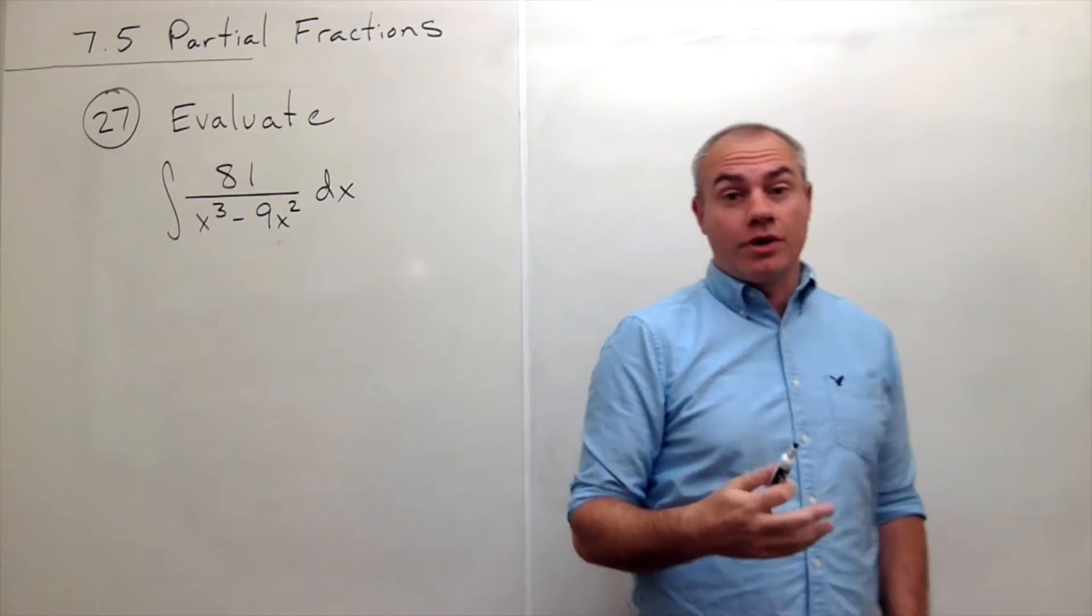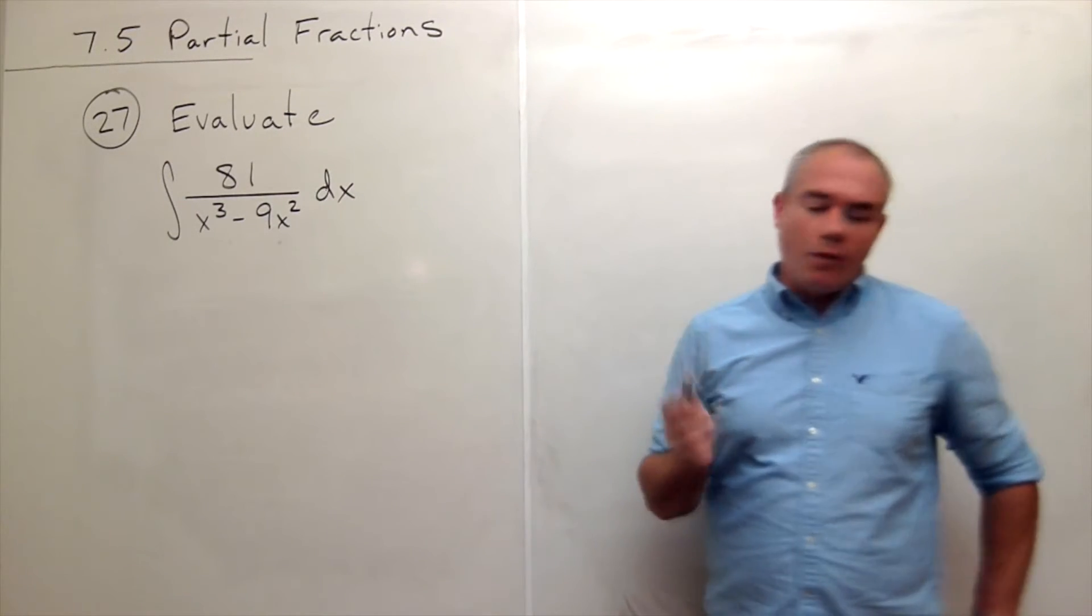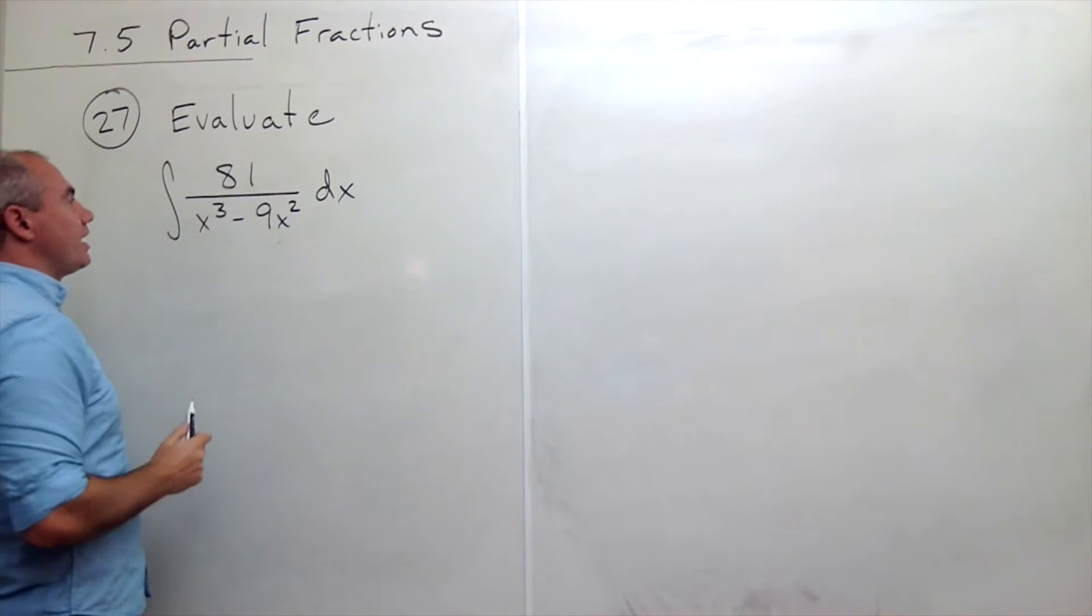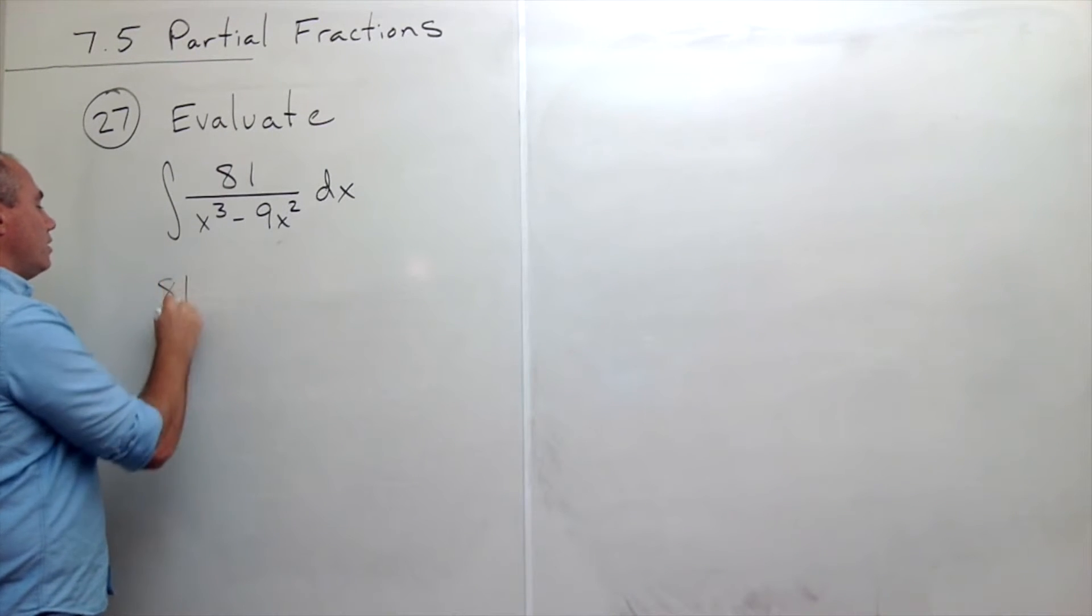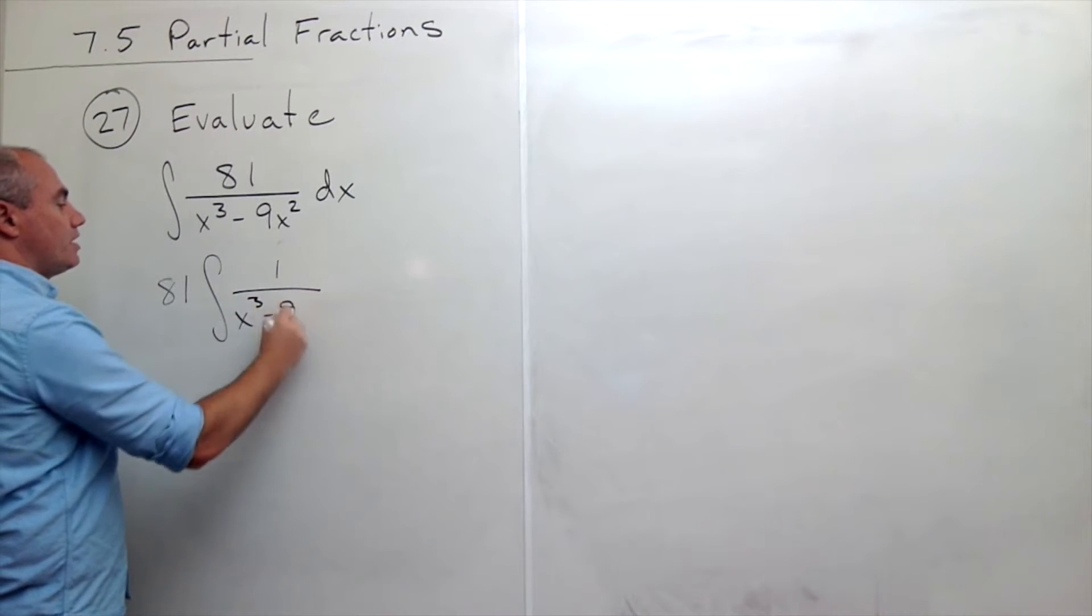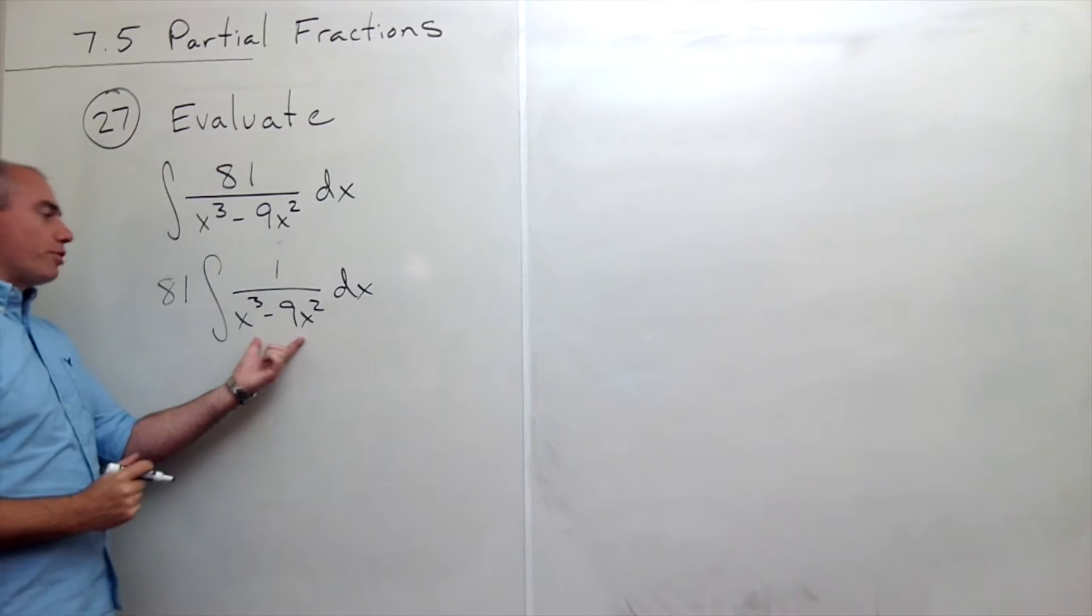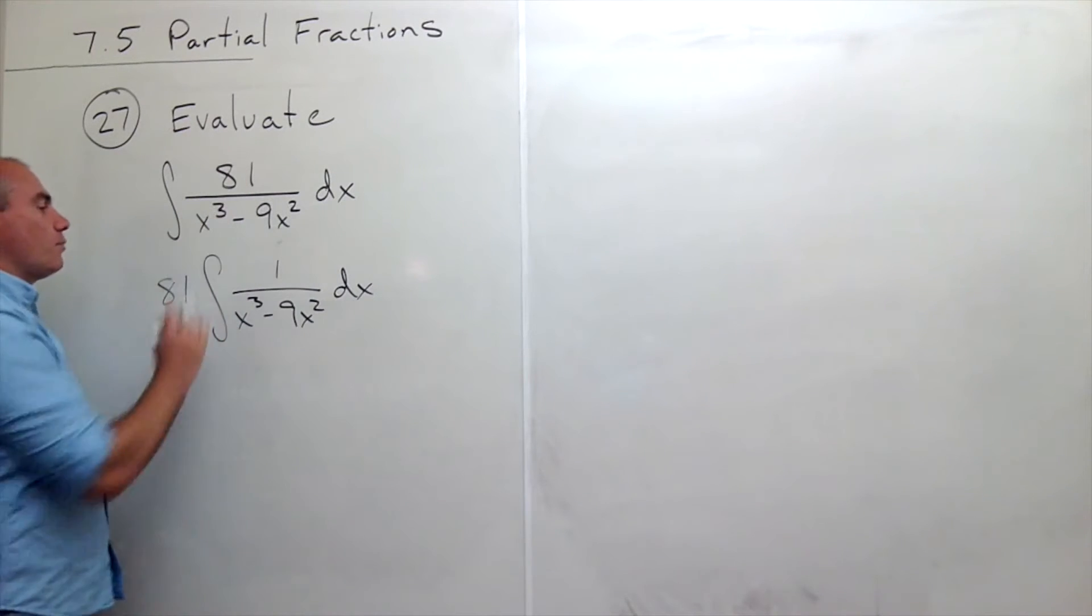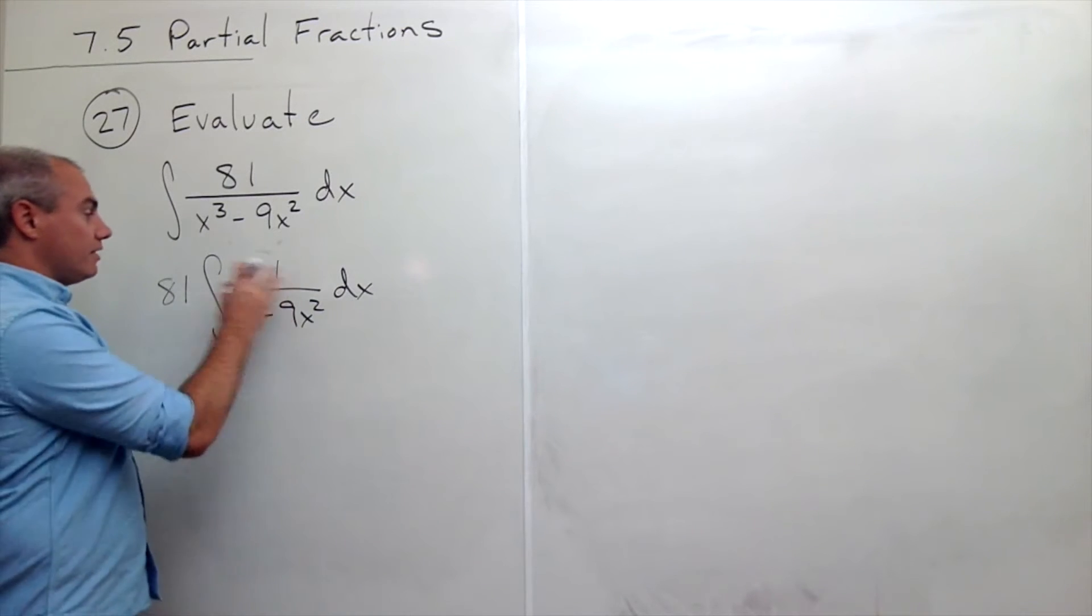We're using partial fractions, so we're going to want to break this up. But before I do that, I don't really want to play around with the 81, so I'm just going to bring the 81 outside of the integral. Now I just have 1 over x cubed minus 9x squared dx. I'm just going to use partial fractions on the 1 over x cubed minus 9x squared instead of the 81. I'll have to remember that the 81 is there at the end, but for now let's just take it out.